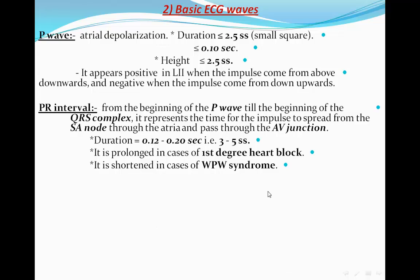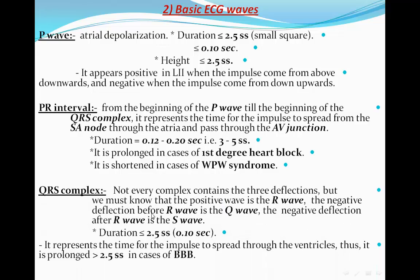Regarding the QRS complex, not every complex contains all three deflections — Q, R, and S. The positive wave is called the R wave, the negative deflection before the R wave is the Q wave, and the negative deflection after the R wave is the S wave. The duration of the QRS complex is exactly the same as that of the P wave — one tenth of a second — so it shouldn't exceed 2.5 small squares in width.